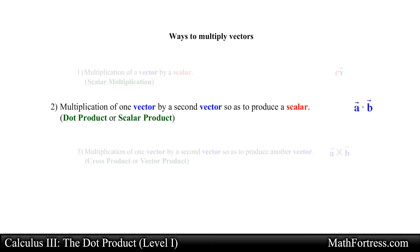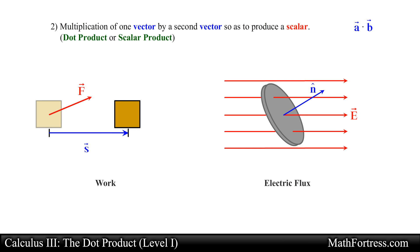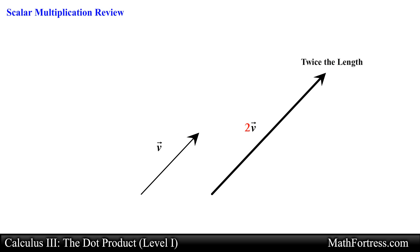The most common use of the dot product in physics and engineering is to decompose vectors into their components parallel and perpendicular to a given vector. Let's first go over a visual demonstration of how the dot product is defined geometrically.